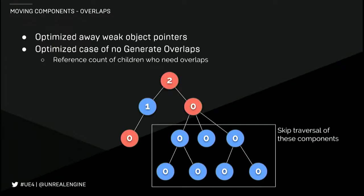One of the slowest parts when you move components is if that component needs to generate what we call overlap events when it touches something else. This is on by default, so you do want to look at profiles and see if there's anything generating events you don't need. We found the spinning tomato head doesn't need to generate overlap events every time it moves, so we turned that off. An optimization we made was changing the way we traverse all components inside an actor to figure out whether we want to generate an event. Previously we'd have to walk to every single one; now we remember how many children have overlaps, and if that number is zero we don't need to look at them at all — not touching memory is better than touching it and doing no work. This is in the 4.19 release.